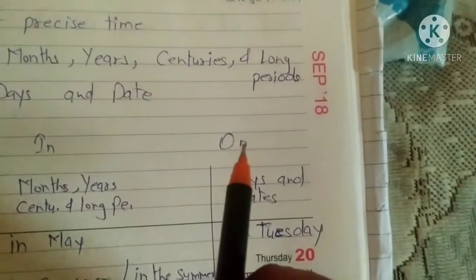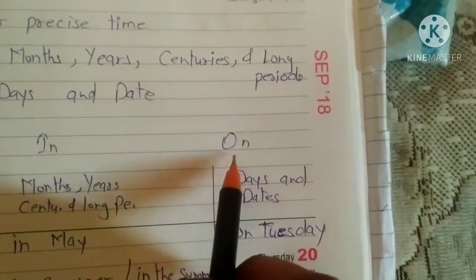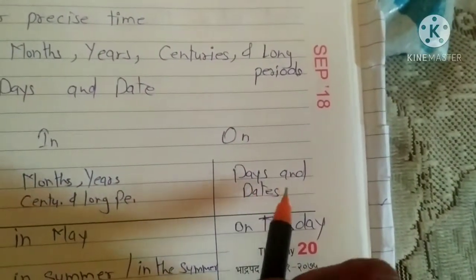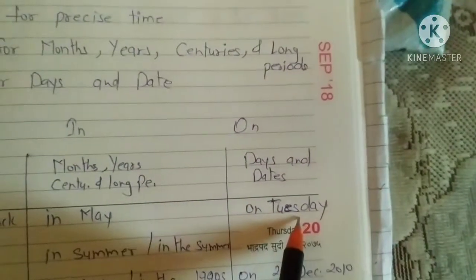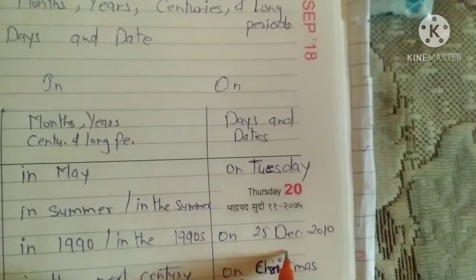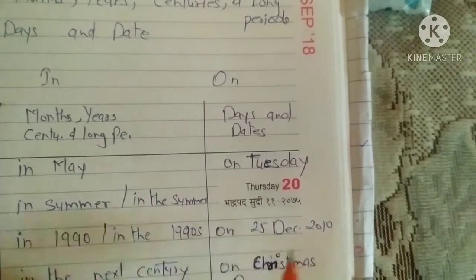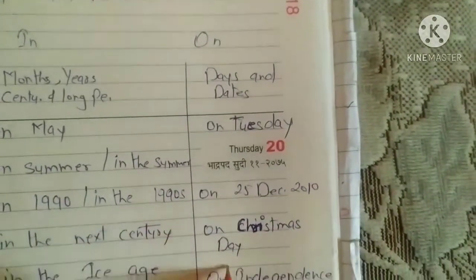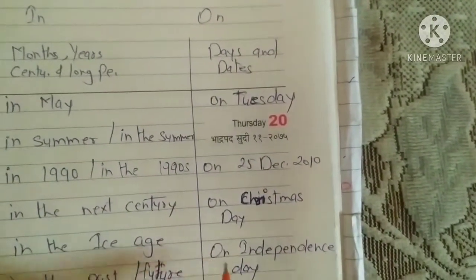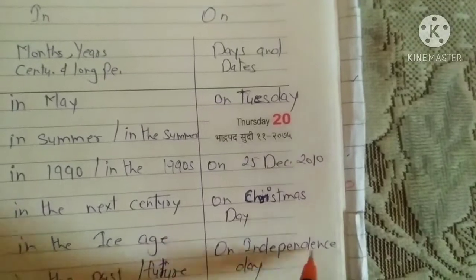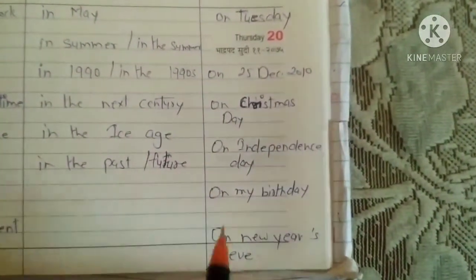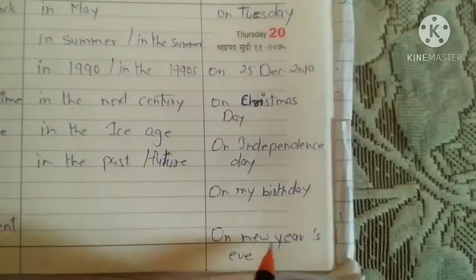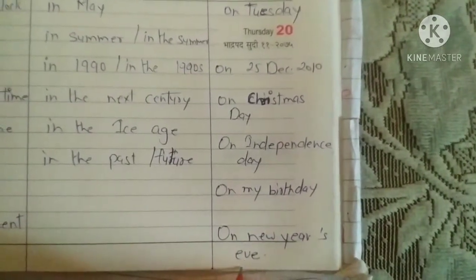Now look at the use of 'on'. We use 'on' with days and dates. For example: on Tuesday, on 25 December 2010, on Christmas Day, on Independence Day, on my birthday, on New Year's evening.